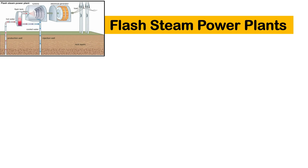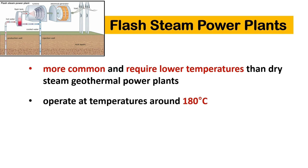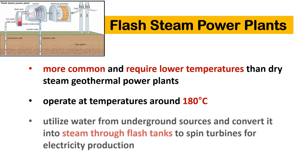Flash steam power plants are more common and require lower temperatures than dry steam geothermal power plants. These geothermal power plants operate at temperatures around 180 degrees Celsius. They utilize water from underground sources and convert it into steam through flash tanks to spin turbines for electricity production.